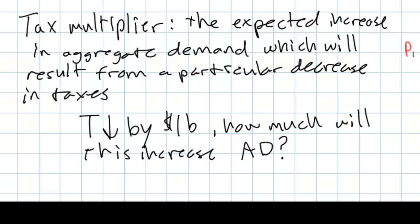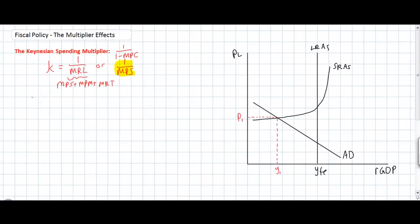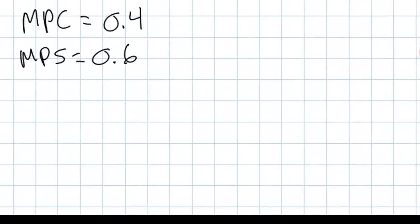When taxes are cut, aggregate demand will increase by a multiple of the amount that the tax cut equaled. On the other hand, if taxes are raised, aggregate demand will fall by a particular multiple of the tax increase. Let's assume that in a particular country the marginal propensity to consume is 0.4, giving us a marginal propensity to save of 0.6. Let's say that a government lowers taxes on households by one billion dollars — how will this affect household disposable income and therefore aggregate demand?